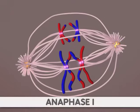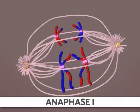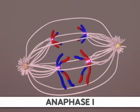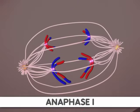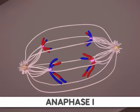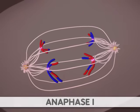The next phase is anaphase I. During this phase, homologous chromosomes separate and migrate to the two poles of the cell. Importantly, the sister chromatids remain attached at their centromeres.